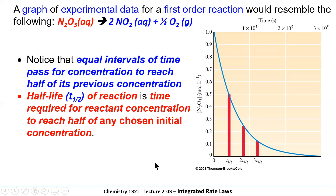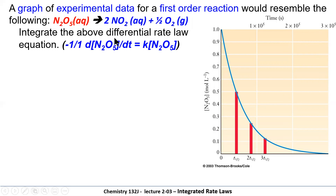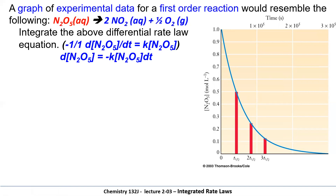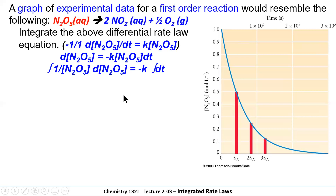Now we're going to develop the integrated rate expression. Here is the differential rate expression — we look at the rate of change of N₂O₅ over time. The weighting factor is minus one over one, because N₂O₅ is being consumed in the ratio of one mole. We're going to take the derivative of N₂O₅ and compare it to minus K times the concentration times dT. We've taken the concentration of N₂O₅ and divided both sides by it, putting concentrations on one side and time on the other. That gives us one over [N₂O₅] times d[N₂O₅] equals minus K.